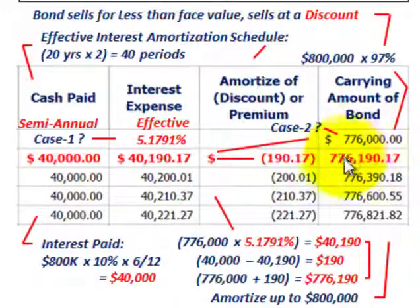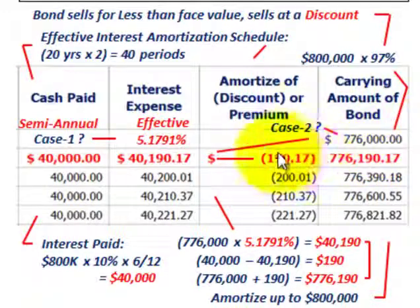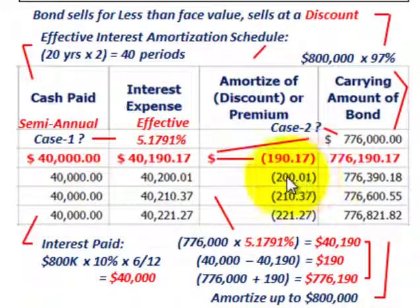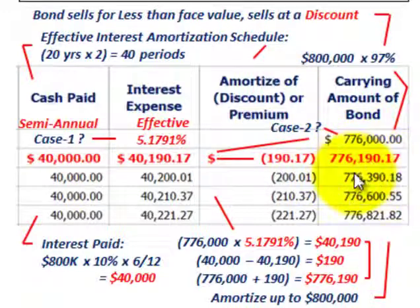To determine the new carrying amount, take $776,000 and add the amortized discount of $190, giving a new carrying amount of $776,190. Then just repeat: take the effective interest rate times the new carrying amount to get interest expense for the period, subtract the cash paid to get the amortized amount. For the next period it will be $200. Since it was issued at a discount, you add that amortized amount to the beginning carrying amount to get the new carrying value.